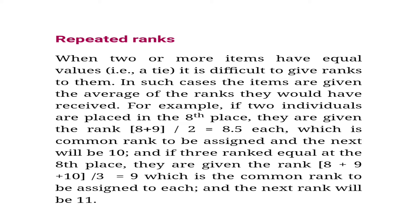In such cases the items are given the average of the ranks they would have received. For example, if two individuals are placed in the 8th place — suppose they scored the same marks, so they both occupy 8th and 9th place. What you have to do is 8 plus 9 divided by 2, which is 17 divided by 2, equals 8.5. The midpoint between 8 and 9 is 8.5, so you give rank 8.5 to both. The next successive rank will then be rank 10.